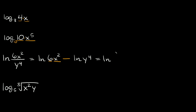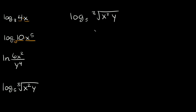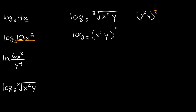Now let's do this last one: log base 5 of the cube root of x squared times y. When working with logs, you normally don't want to work with radicals — square roots, cube roots, whatever. It's easier to work with exponents. So let's turn this cube root into an exponent. Instead of the cube root of x squared times y, this is the same as x squared times y, all raised to the one-third power. So we get log base 5 of x squared times y, all raised to the one-third.